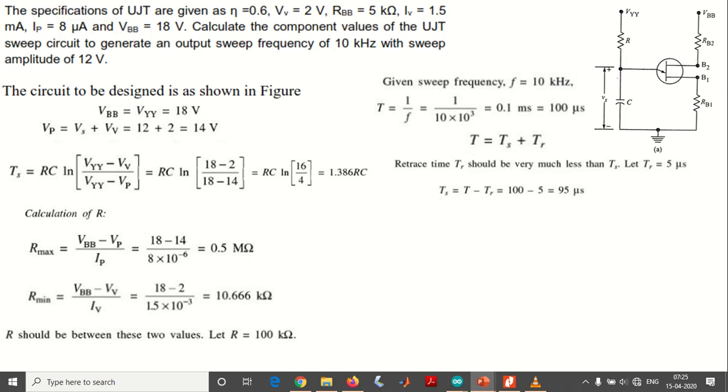Now TS equals T minus TR. The total sweep time TS equals 95 microseconds. The total time period capital T is 100 microseconds, and we are considering the return time as quite small compared to TS, so we're taking an approximation of 5 microseconds, and the remaining 95 microseconds will be the sweep time period.